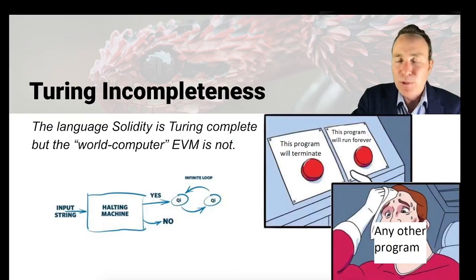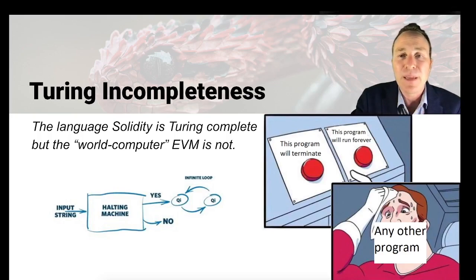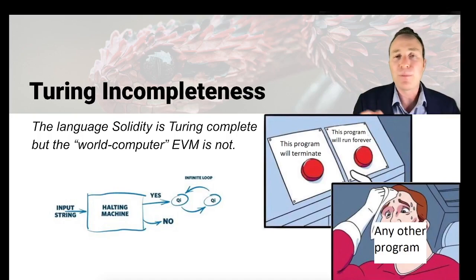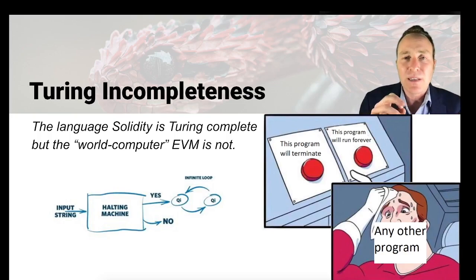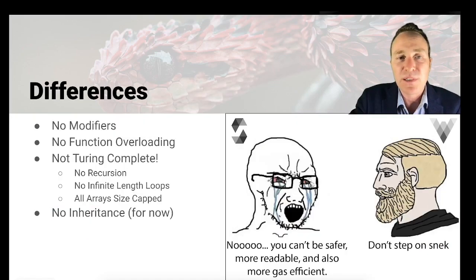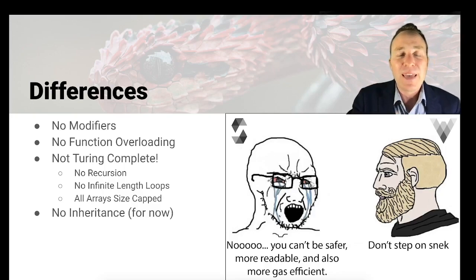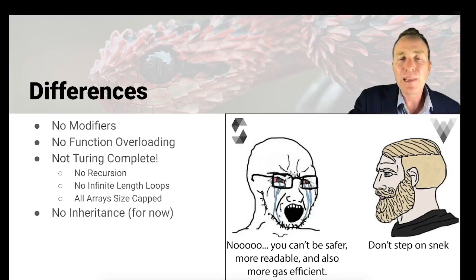One interesting thing about Viper is that it's Turing incomplete — and this is because the EVM is also Turing incomplete. It's not going to be able to execute programs forever; it has to be able to halt. Solidity the language is Turing complete, so it could theoretically run an infinite program, but the EVM can't. Viper is intentionally built to be more compatible with the reality of the EVM blockchain. For example, in Solidity you can have recursion and infinite-length loops, but Viper does not allow these. Viper requires all arrays to be capped — you have to declare upfront how long your array can be. It's more realistic, but it's a bit of a learning curve.